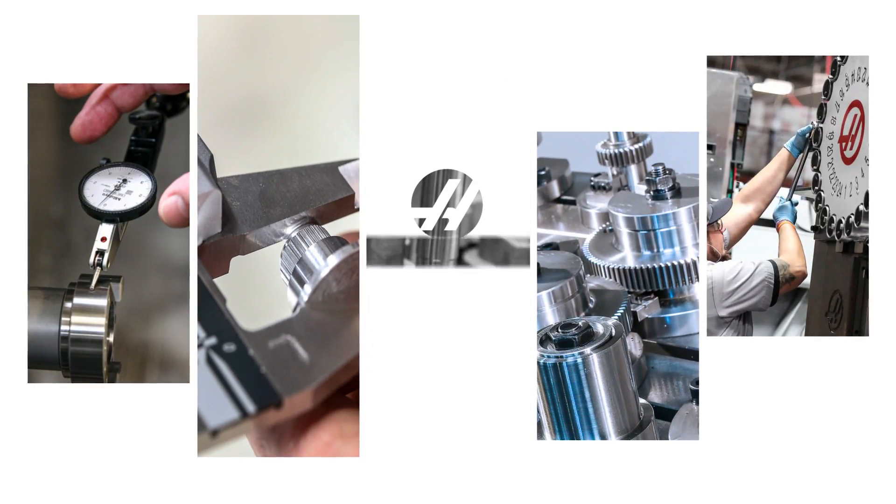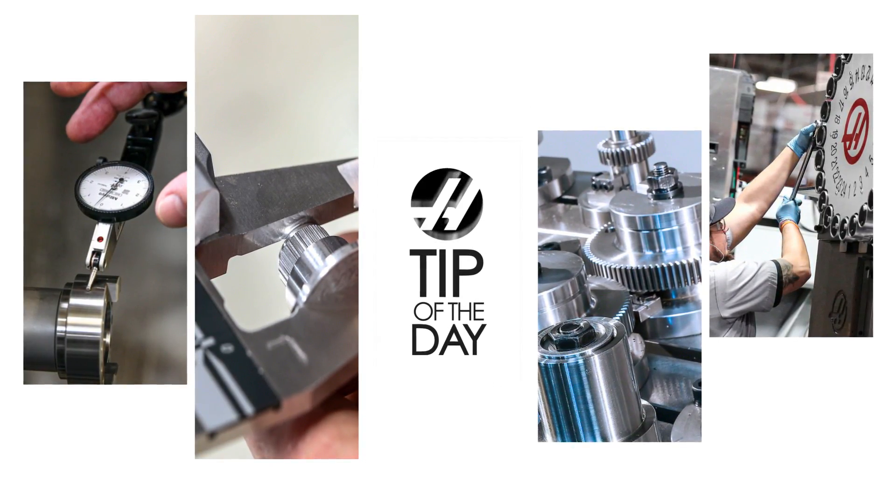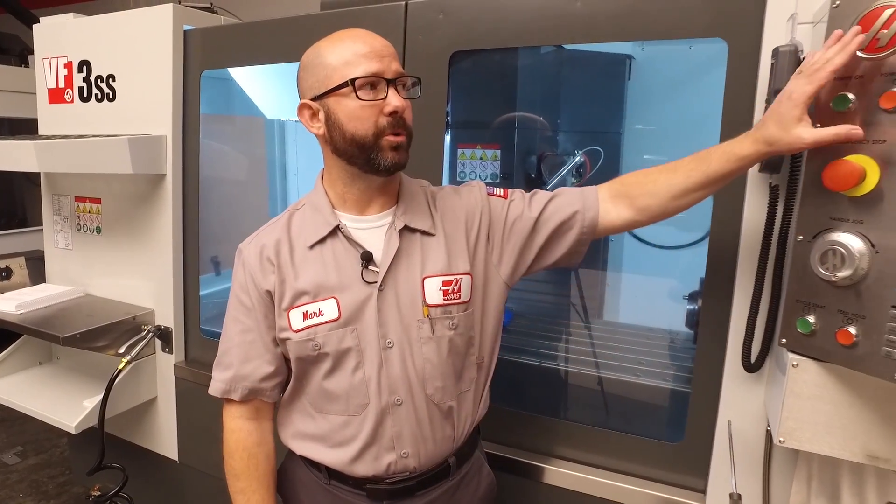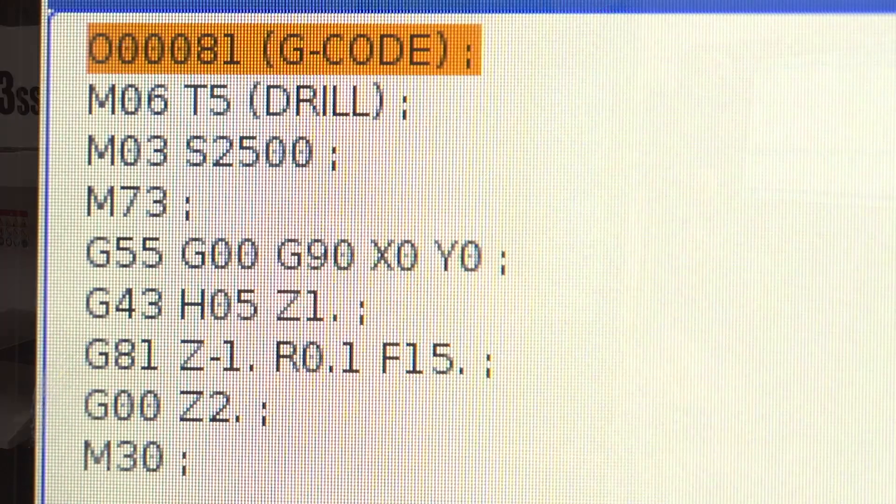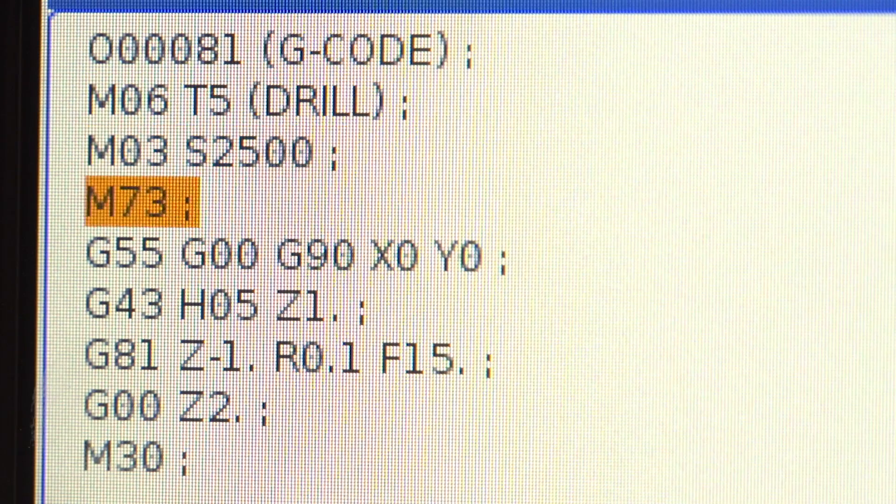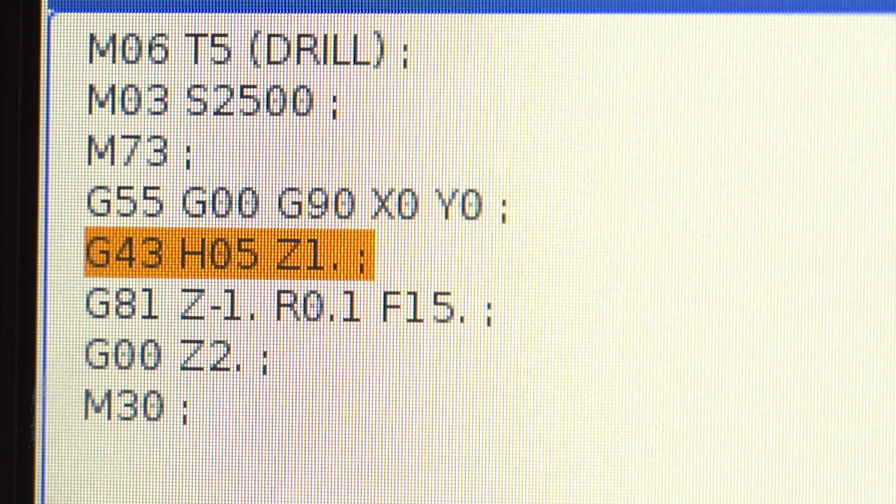Now for more information on how G-code works, stick around. Now if you look at a G-code program, what you're going to see are strings of letter-number combinations. Let me give you a brief overview of what those letter codes do.